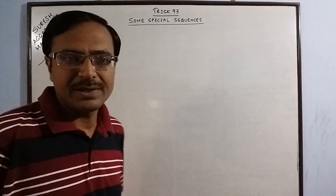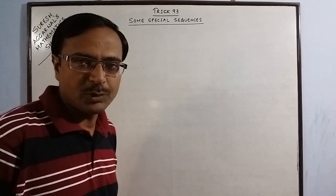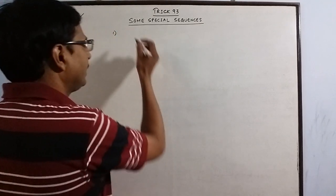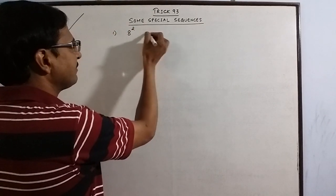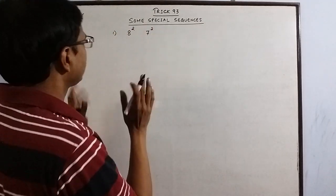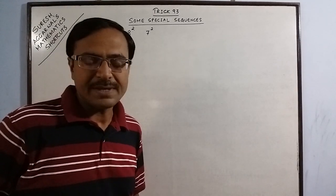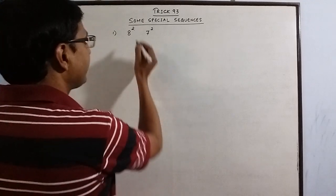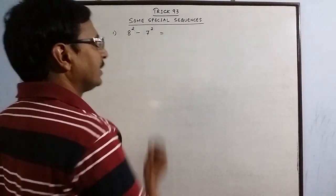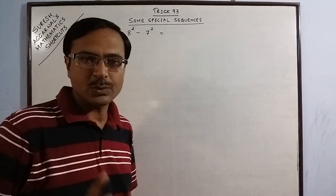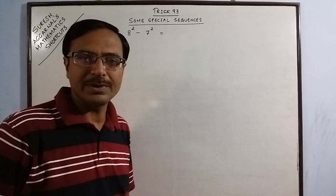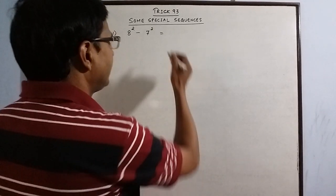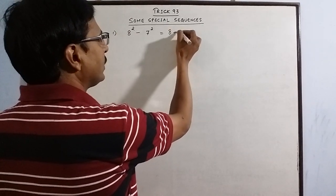Say we have the squares of two consecutive natural numbers — say 8 square and 7 square. These are two consecutive natural numbers 7 and 8, and I want to find the difference of their squares. For finding the difference of squares of two consecutive natural numbers, you don't actually need to find the squares — just add their bases and you get the answer.